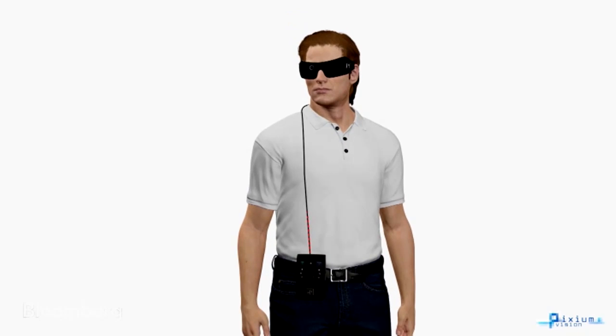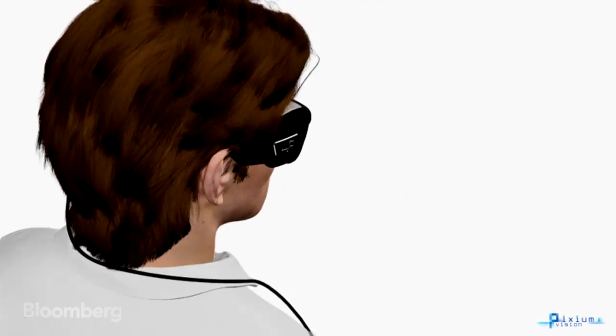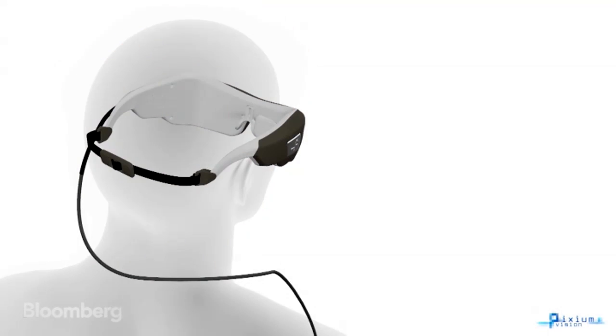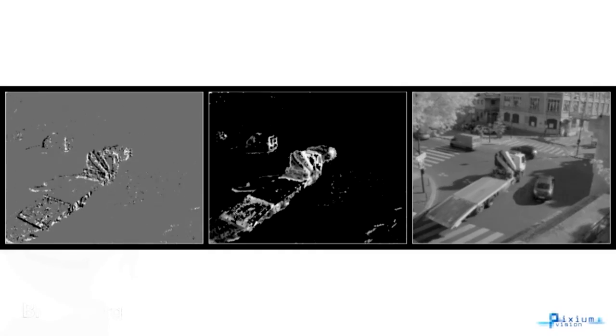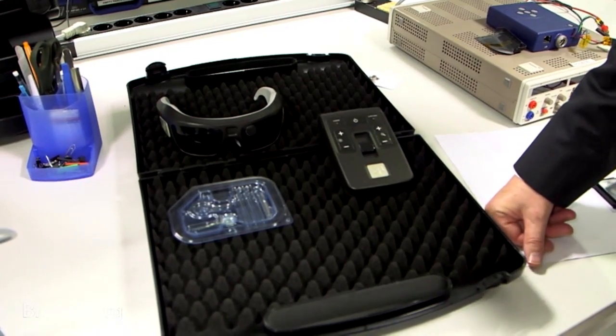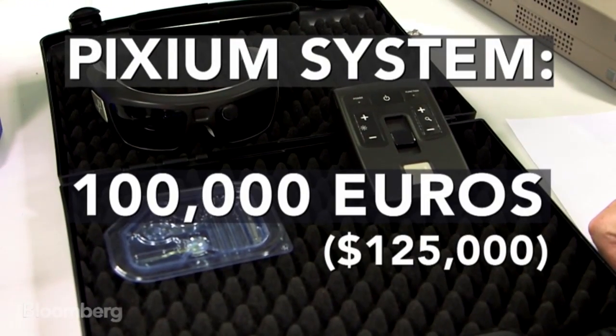A mini camera built into the glasses transmits the signal to an implant behind the retina. And that allows the eye to see in two dimensions for now, with shapes and basic shades. This first generation of implants costs 100,000 euros.